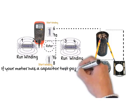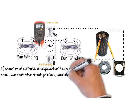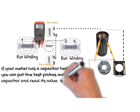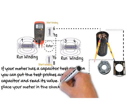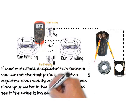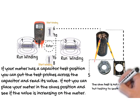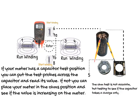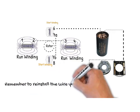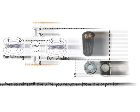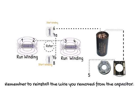If your meter has a capacitor test position, you can put the test probes across the capacitor and read its value. If not, you can place the meter in ohm's position to see if the value is increasing on the meter. The ohm test is not accurate, but testing to see if the capacitor takes a charge. Remember to reinstall the wire you removed from the capacitor, as indicated by the arrow.